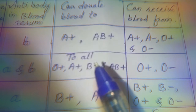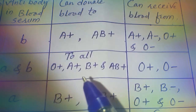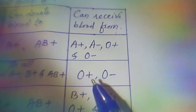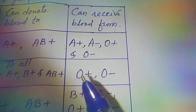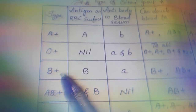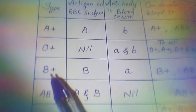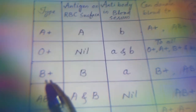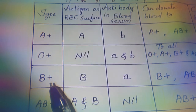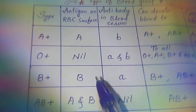That is why the O blood group person is known as a universal donor. However, this person can only receive blood from O positive and O negative persons.